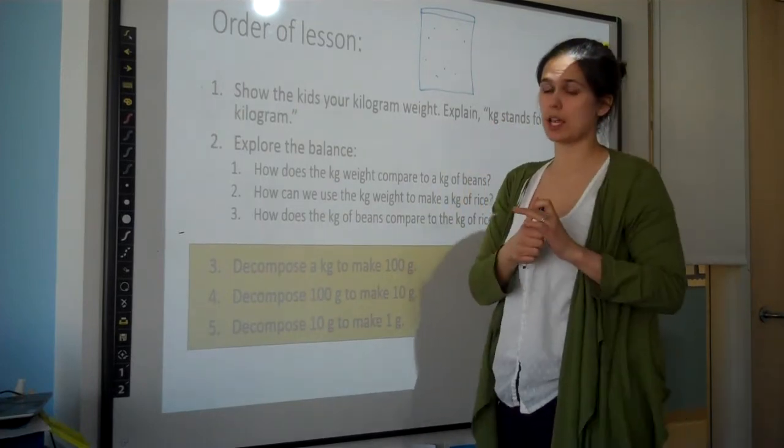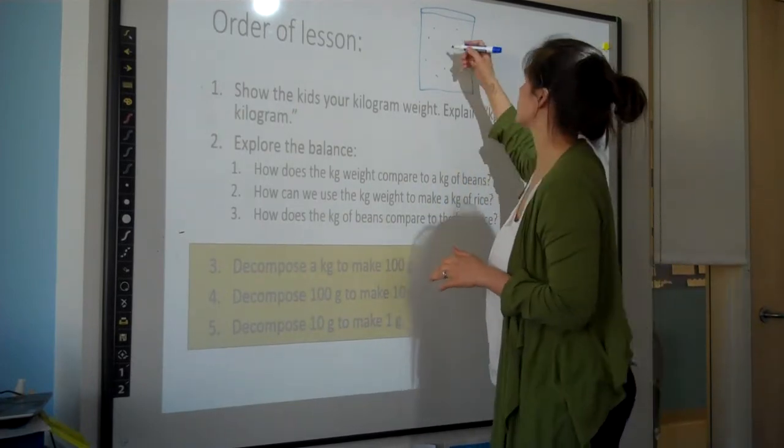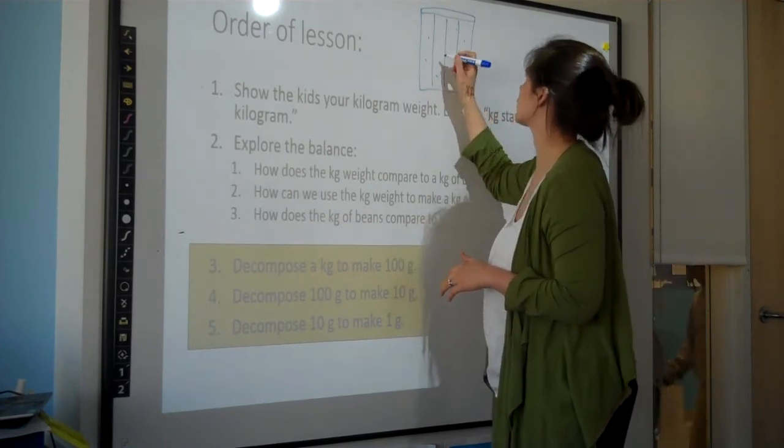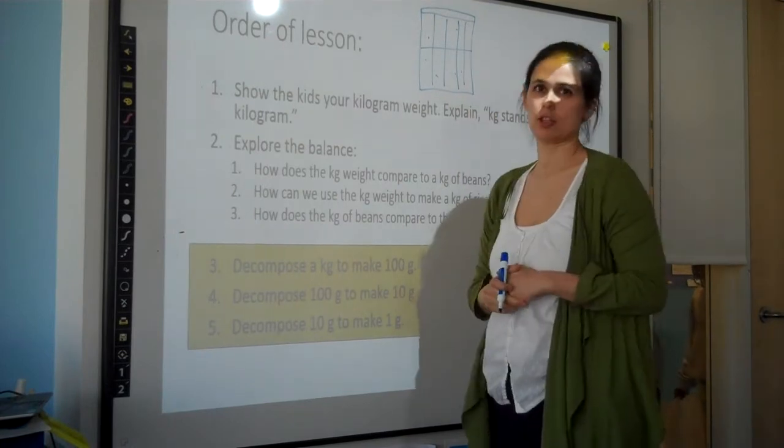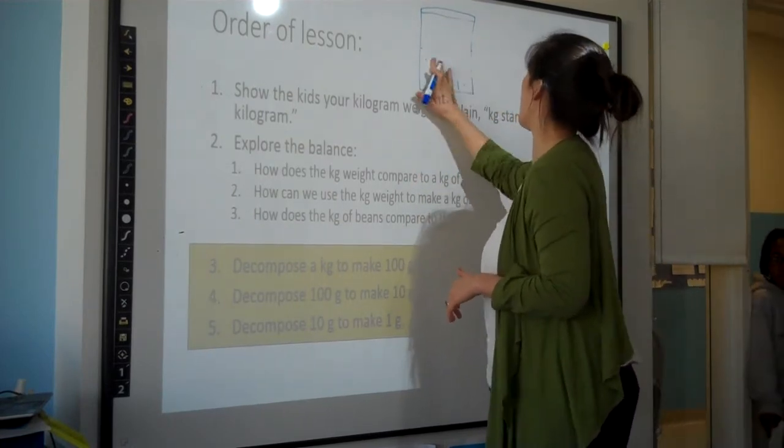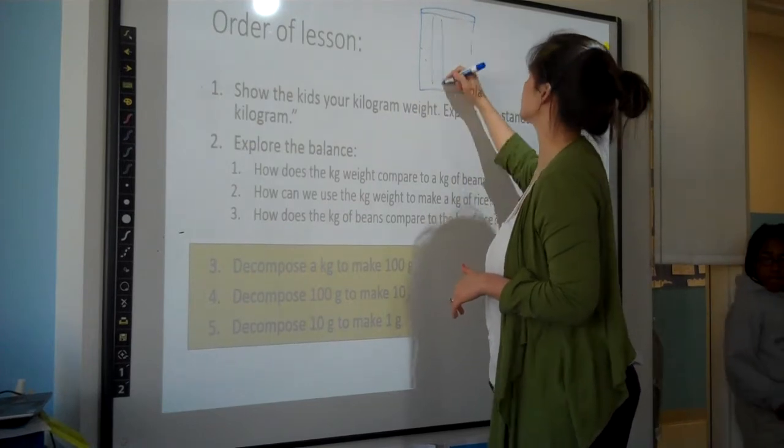And basically, the pictures are there in Engage New York for you to use, but basically, you put a 100s grid, or a 10s grid, on top of the bag. You literally, you do it evenly, of course, draw on the bag in 10 chunks.